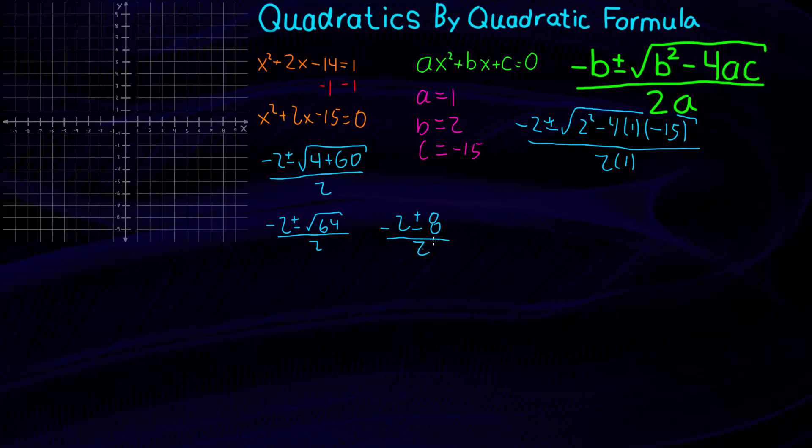Now we're at, because we have this in the bottom, we can divide this. Both of these are divisible by 2. So now we have negative 1 plus or minus 4. And so here is essentially our answer but let's go ahead and work these out.